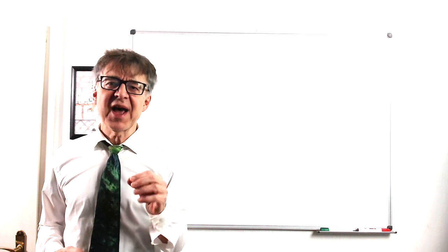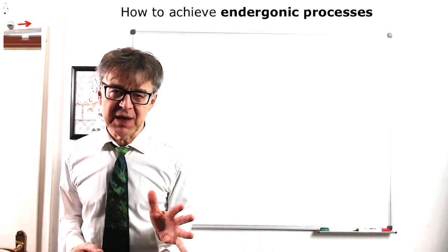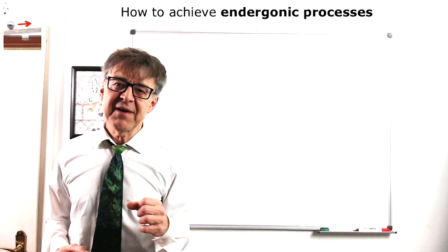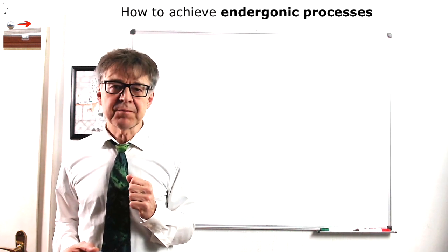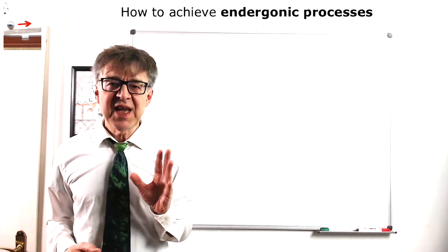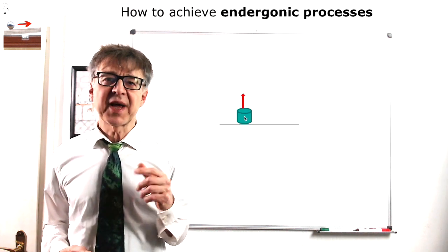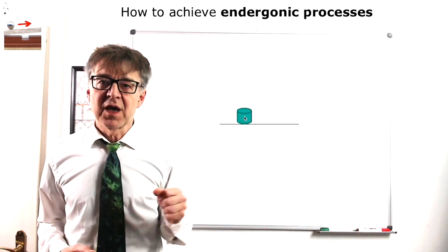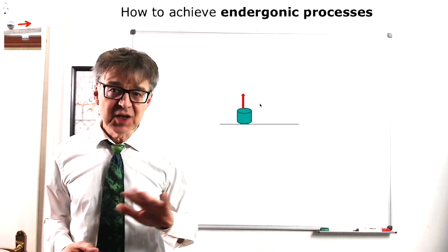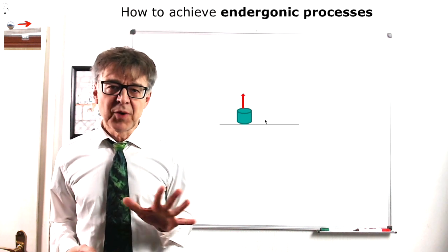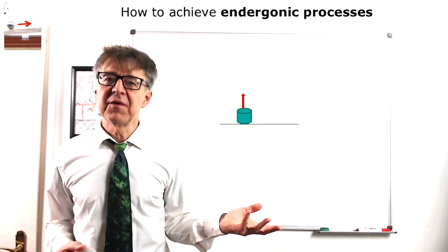There are also reactions that are endergonic at any temperature, so they will never have an affinity. What can we do in those cases? First of all, let's illustrate those processes with a mechanical analogy. A weight that lies on the floor will never move up voluntarily, at no temperature. The process of lifting up has no affinity.